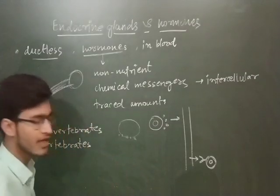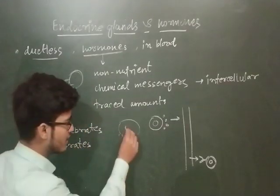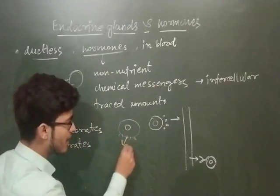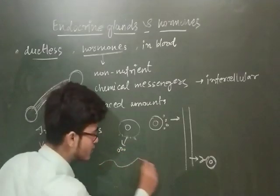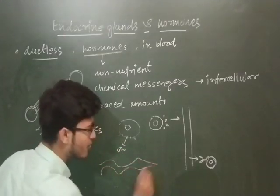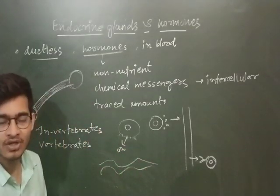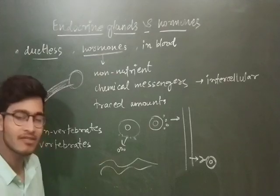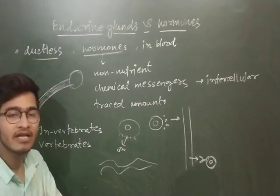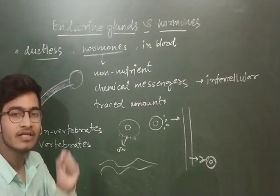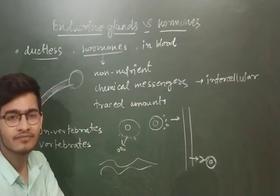So what they have defined is a mechanism: the chemicals are released here, they go into the blood flow, and they travel through it. How do they know where to go? There are specific receptors present on the surface of target cells.